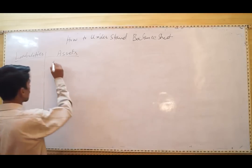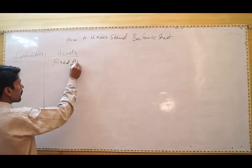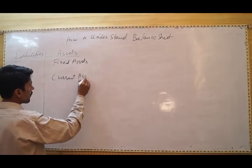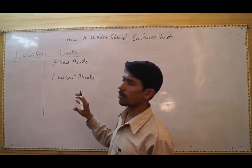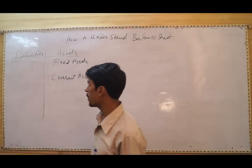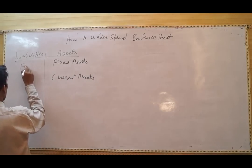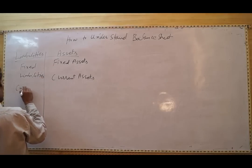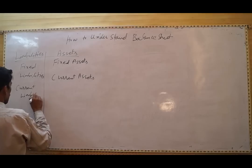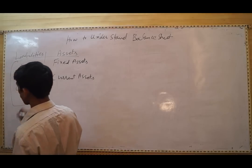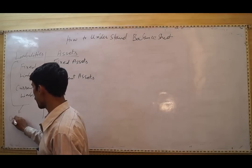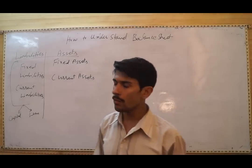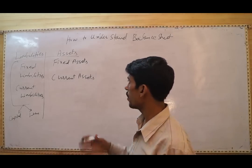We have two types of assets: one is fixed assets and the second is current assets, and they are bought from funds from liabilities. Liabilities are also of two types: one is fixed liabilities and the second is current liabilities. The sources of liabilities are also two: one is capital and the second is loan.